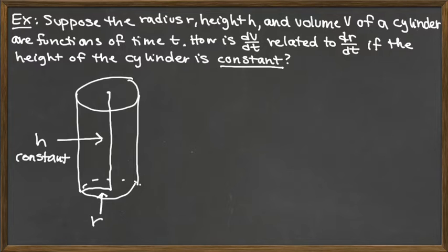Since we want to know the relationship between dV/dt and dr/dt, we need to start with some sort of relationship between v and r. And h, of course, is involved too. So we're talking about the volume of the cylinder here. The volume of the cylinder is πr²h.